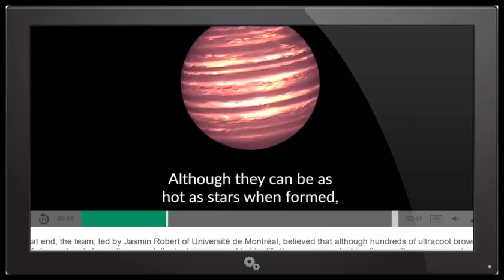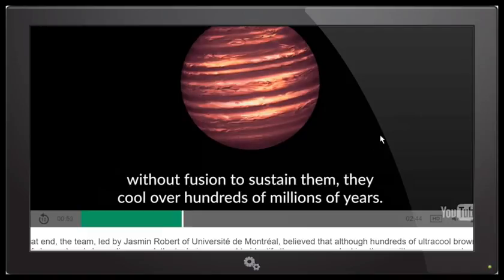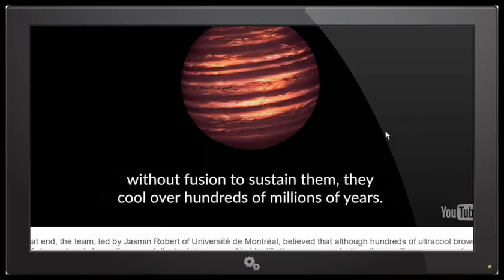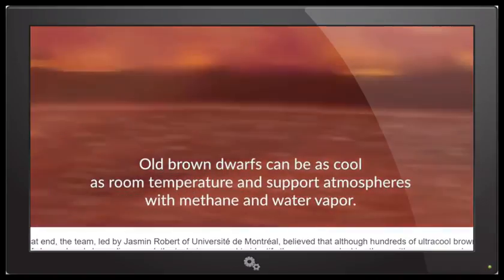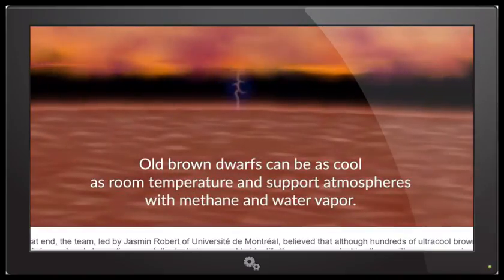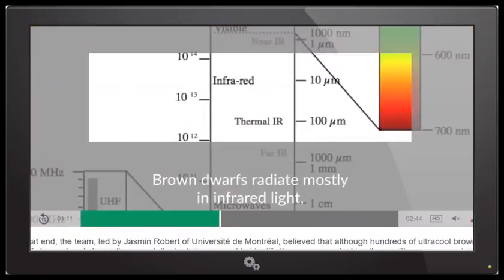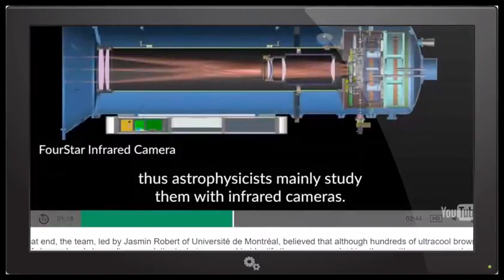It says, although they can be as hot as stars when formed, without fusion to sustain them, they cool over hundreds of millions of years. Old brown dwarfs can be as cool as room temperature and support atmospheres with methane and water vapor. Brown dwarfs radiate mostly in infrared light.